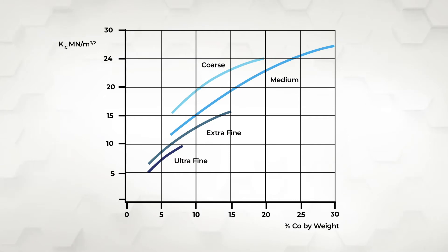Generally speaking, the toughness of cemented carbides increases with increasing binder content and increasing grain size of the tungsten carbide.